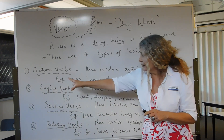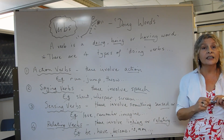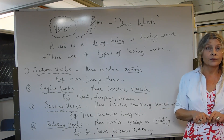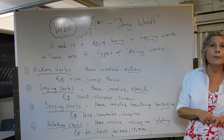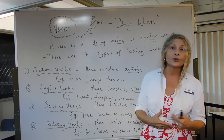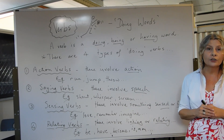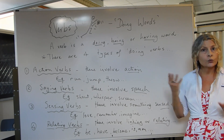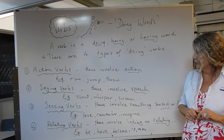Saying verbs, the second type, are very important particularly in our writing. These involve speech — for example, shout, whisper, scream. When you're writing a story and you want your dialogue to be more interesting, it's important to use some of these different words to generally keep your reader more engaged.